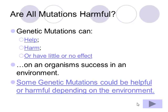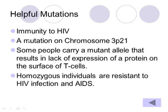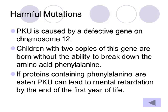Are all mutations harmful? First, not all mutations end up with a change in trait. But assuming it does end up in a change in trait, some genetic mutations actually could help an organism. For example, there is a mutation that leads to immunity to HIV. People who have this mutant allele don't express a certain protein on the outside of their T cells, and as a result they are resistant to HIV infection and AIDS — a hugely helpful mutation, especially in an environment where there is a lot of HIV. Some mutations are harmful. In PKU, there is a defective gene on chromosome 12, and if children have two copies, they don't have the ability to break down the amino acid phenylalanine. If this is not caught and the individual continues to eat phenylalanine, PKU can lead to intellectual disability by the end of the first year of life.